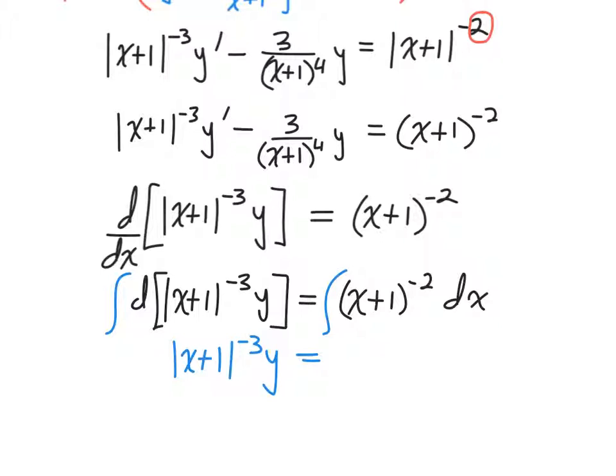So x plus one to the negative third power times y is equal to, and because the inner function here has a derivative equal to one, I can just integrate around it. So increase the exponent by one, divide by the new exponent. So negative x plus one to the negative first plus c.